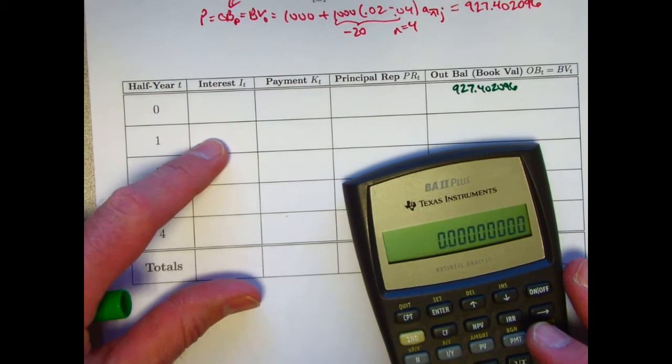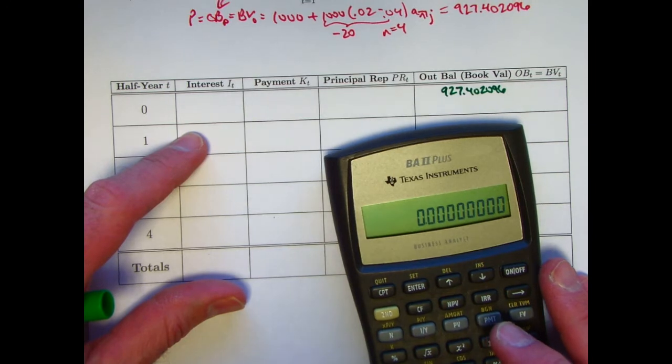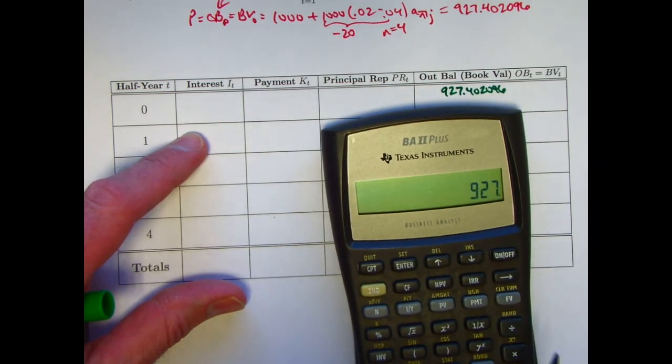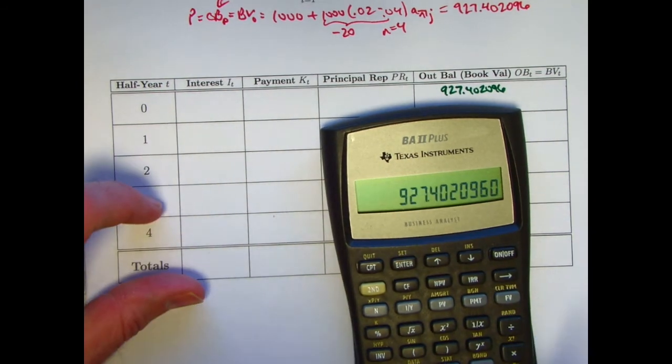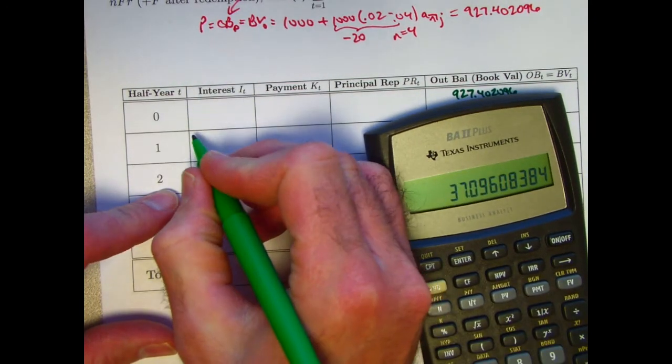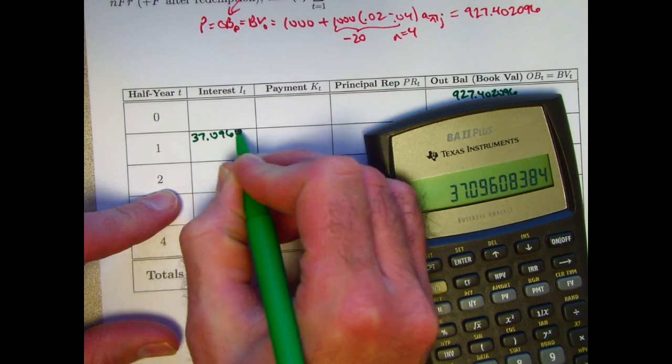All right, so that's the balance. What's the interest at time 1? Again, the yield rate per half year is 4%, so I need to take 4% of this. 927.402096 times 4%, $37.10. I'll write that as 37.096084.